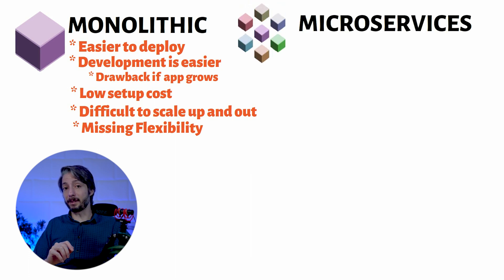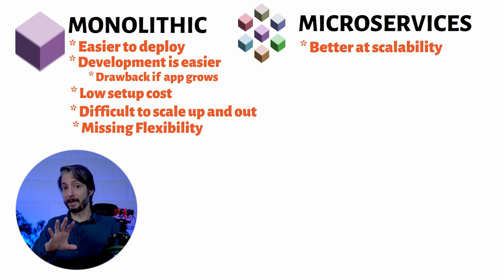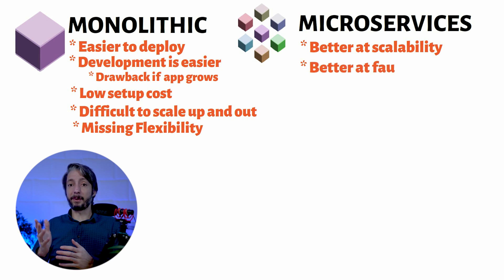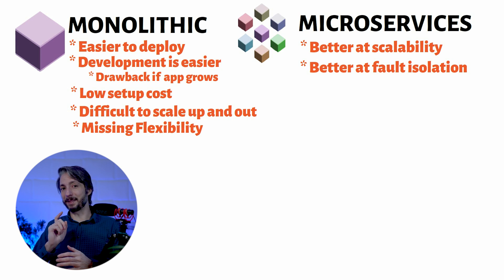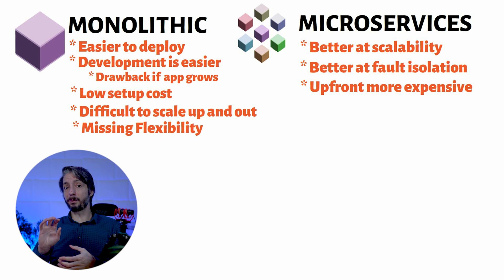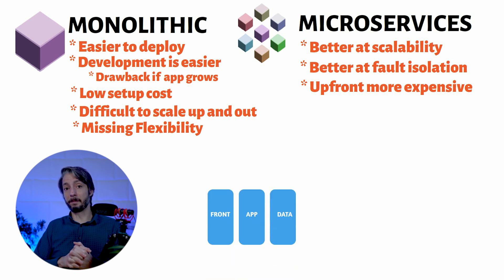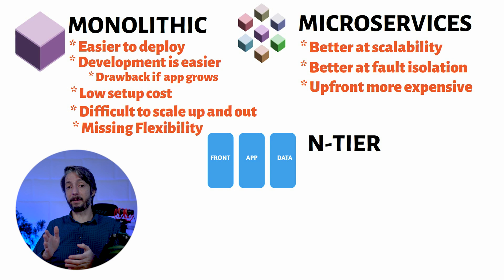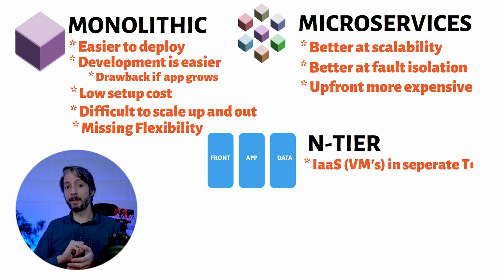A microservices application, on the other hand, is better at scalability, especially at large scale. It's easier to scale and branch out different types of the application, and it's better with fault isolation — if the shopping cart fails, you know exactly which resource and where to look. It is, upfront, more expensive than a monolithic application, requiring a proper application architecture and design with more components. An N-tier application is usually implemented using IaaS virtual machines running in a separate tier.